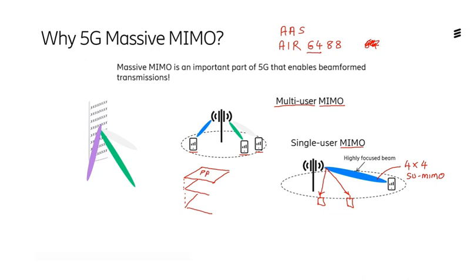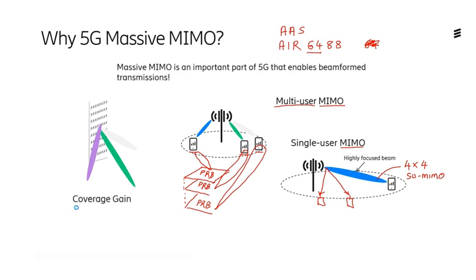These are representative of physical resource blocks. One is the minimum that can be sent to a UE, and of course multiple PRBs can be sent to a UE as well. In this case, we're using the same resources for multiple UEs. A beam could be transmitted to this UE from one layer, another beam from this layer, and another beam from that layer. By utilizing this beamforming, we can improve the coverage through greater antenna directivity and antenna gain.